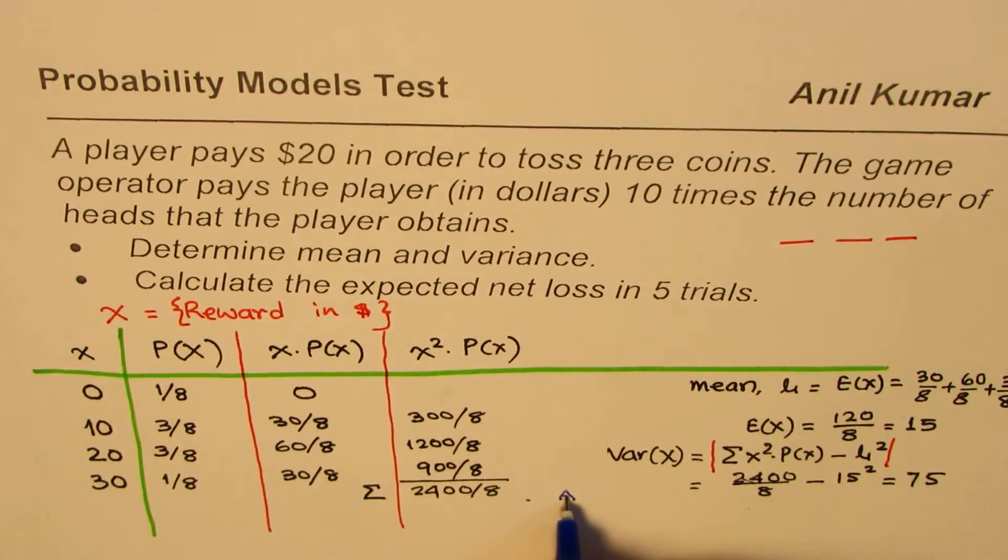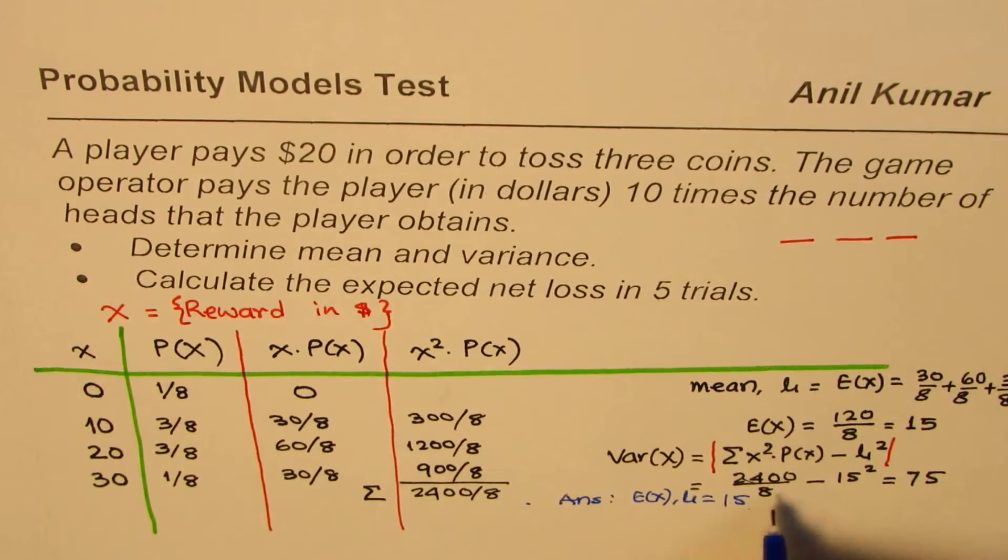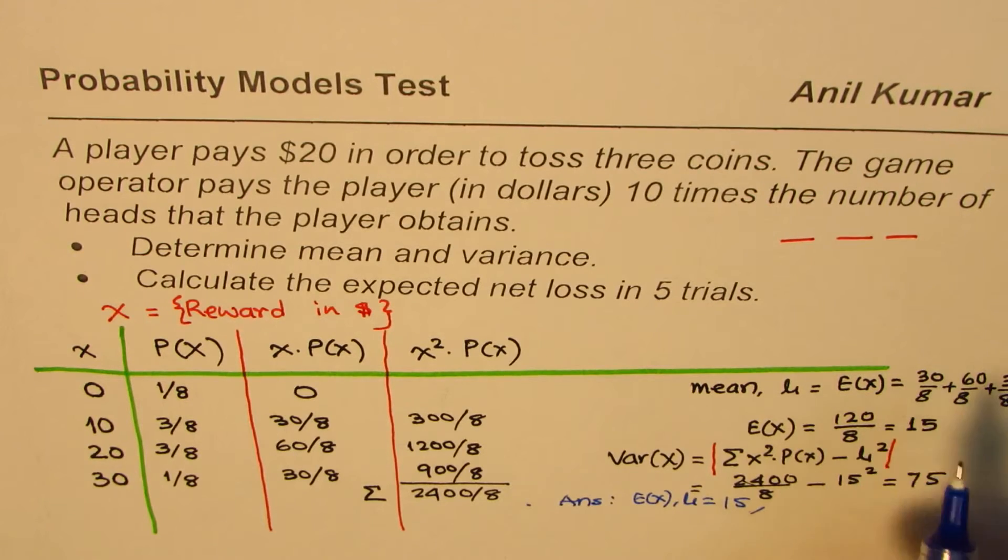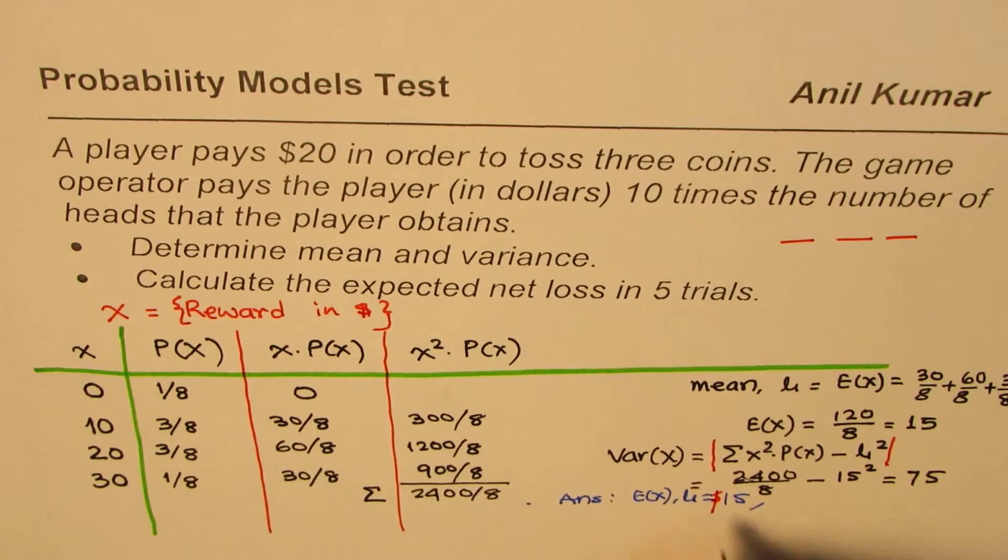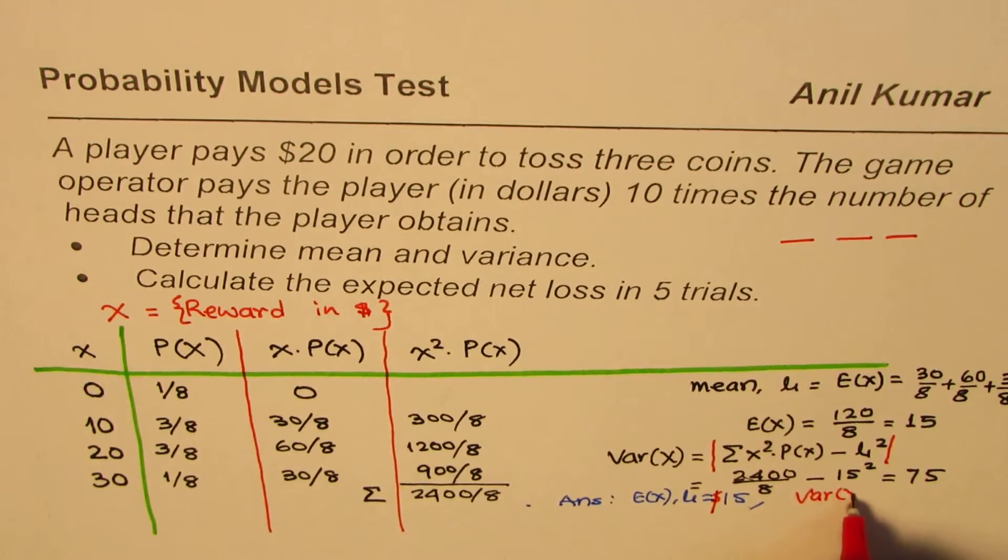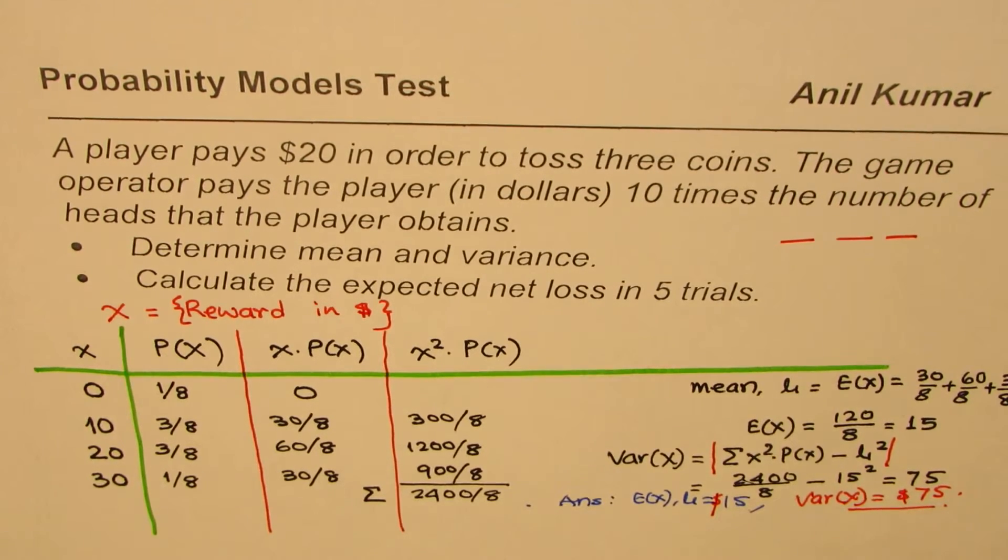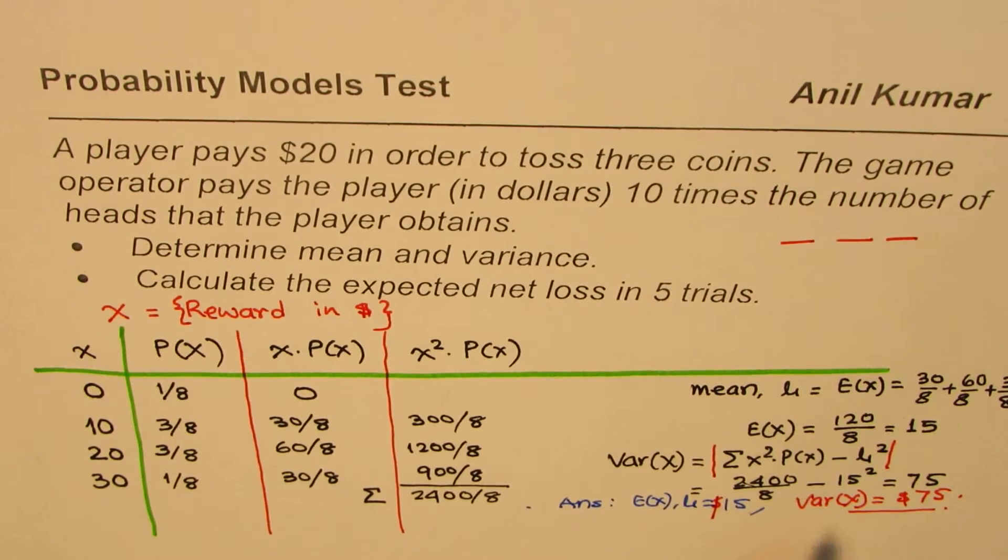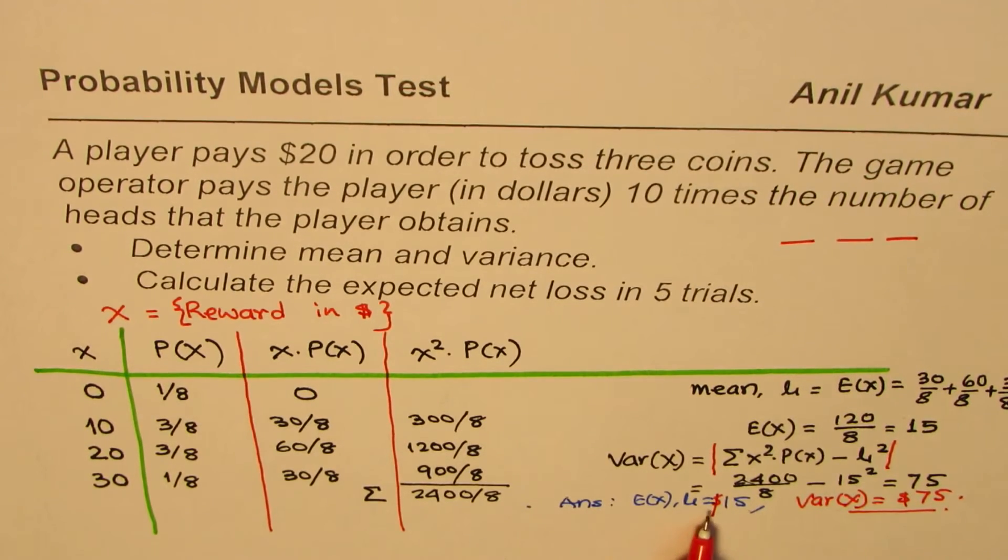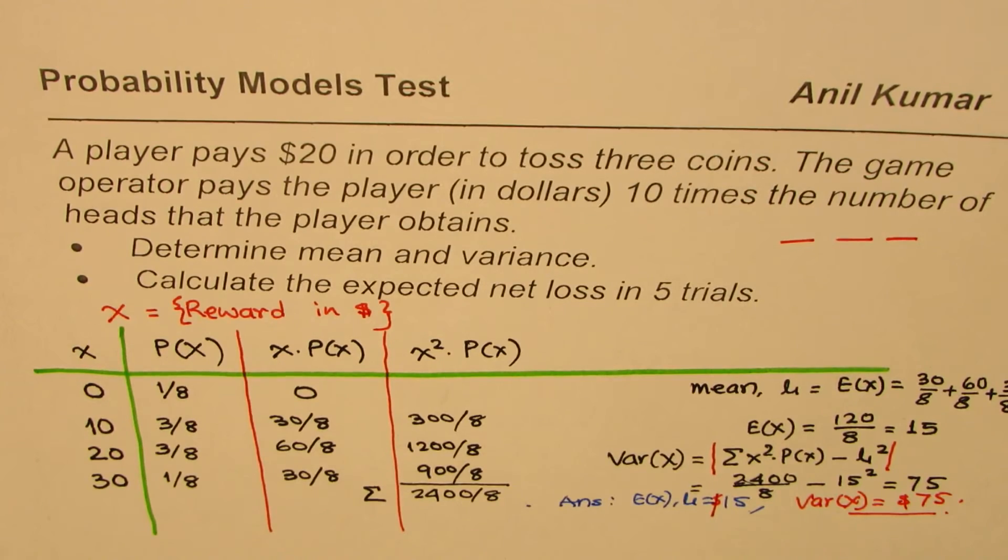So we get our answer. Answer is mean, or the expected value, or you can say mean is equals to 15, and we should write dollars also since the units are dollars, 15 dollars. And the variance is 75 dollars. Now, is it a fair game or not? That could be another part of this question. Since you're paying 20 dollars, the expected value is 15 dollars. That means for the player, every time you play this game, you're going to lose $5.